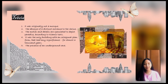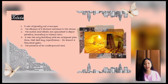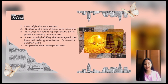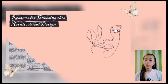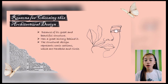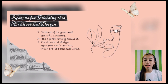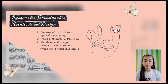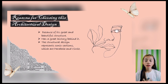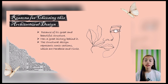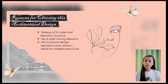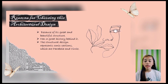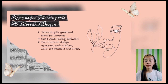As for the reasons for choosing the Dome of the Rock: first, we chose it because of its beautiful and great structure. Second, it has a great history behind it and we want to share it with all of you. Lastly, its structural design features conic sections, specifically the parabola and circle. It also has a unique octagonal shape. Even after several years since its construction, the structural design still stands. There are two conic sections that can be seen in the Dome of the Rock.